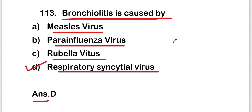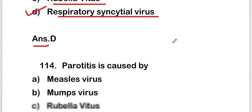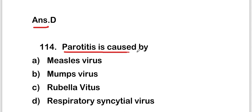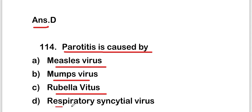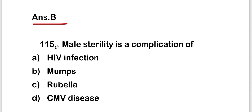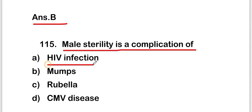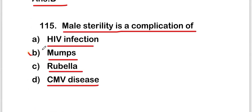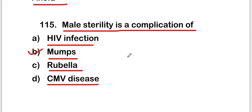The next question is: parotitis is caused by — measles virus, mumps virus, rubella virus, or respiratory syncytial virus? The right answer is option B, mumps virus. Next question: male sterility is a complication of — HIV infection, mumps virus, rubella virus, or CMV disease? The right answer is option B, mumps virus. Male sterility is a complication of mumps.